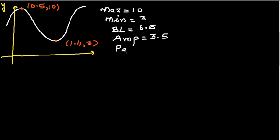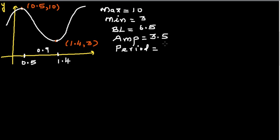Next, find the period using the x-coordinates of the maximum and minimum. The maximum is at x = 0.5 and the minimum is at x = 1.4. This distance of 0.9 is half the cycle, or half the period. So the full period is 1.8.